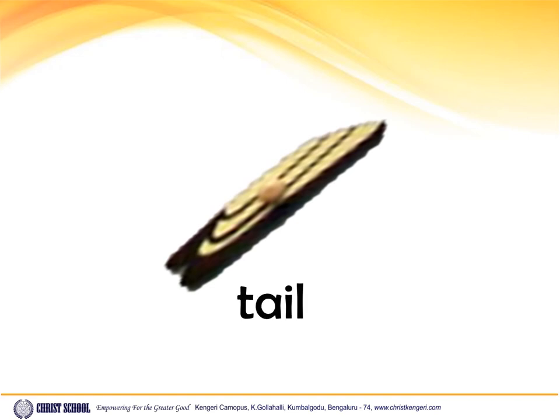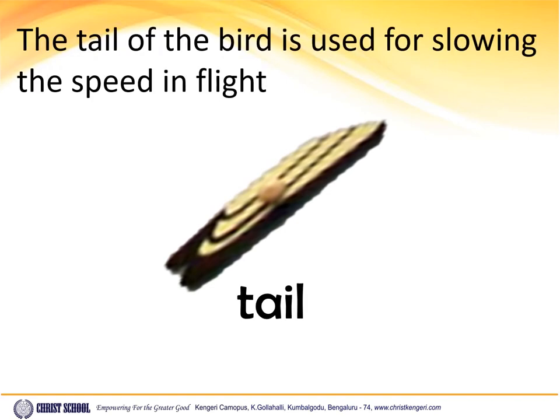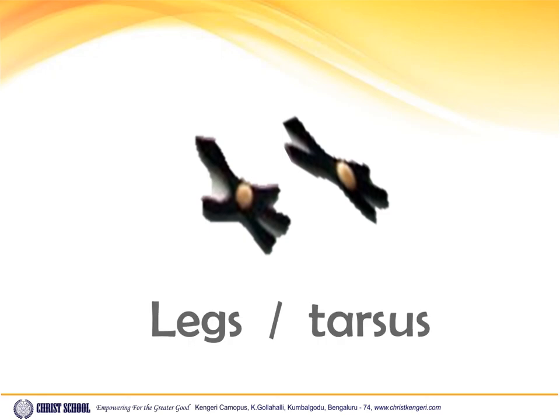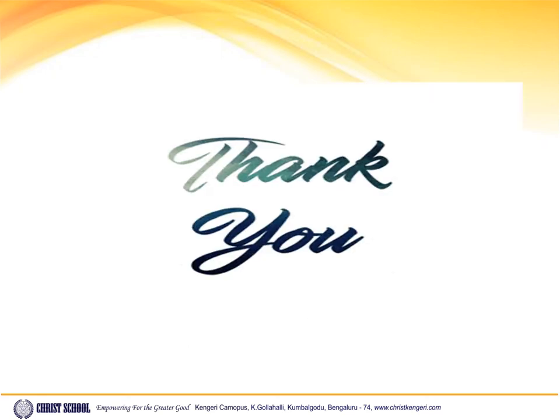Tail. The tail of the bird is used for slowing the speed in flight. These are the bird's legs, also called the tarsus. Thank you for watching the video.